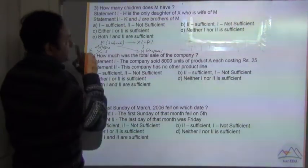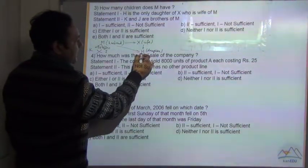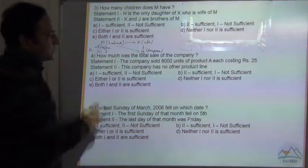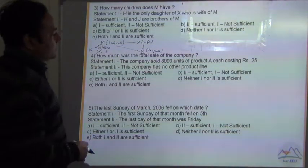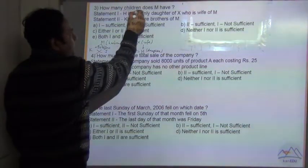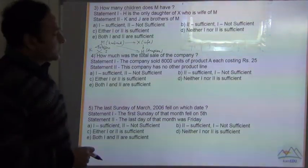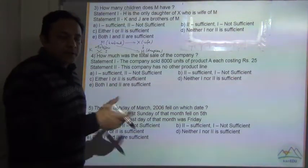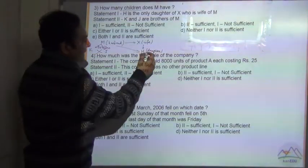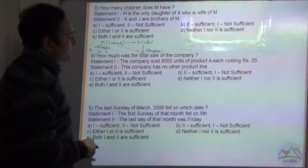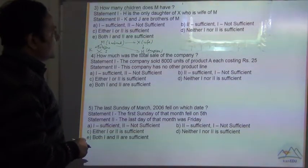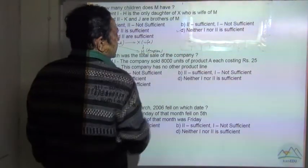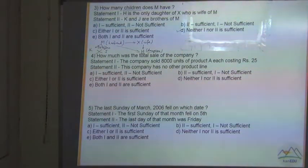The first statement says that H is the only daughter, but it does not talk about sons. How many sons do X or M have? We don't know, because when we are talking about children, it means the children can be daughter and son both. We have only information for daughter, so we don't know how many sons they have. Your answer is D, neither 1 nor 2 is sufficient to answer the question.